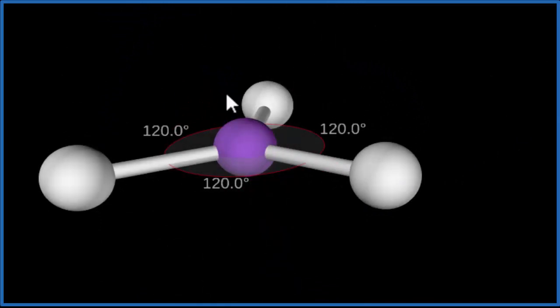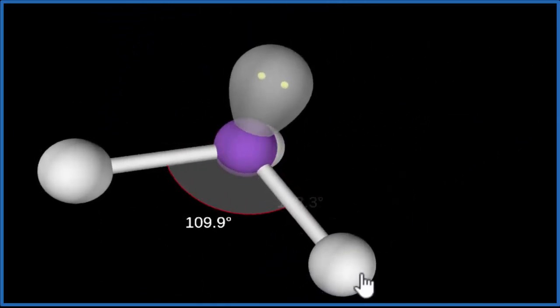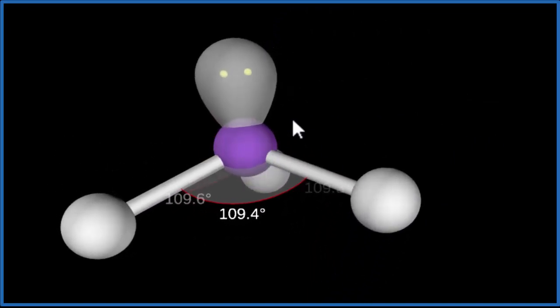When we add that final lone pair on top here, watch how it pushes everything down. There we go. So there's our trigonal pyramidal.